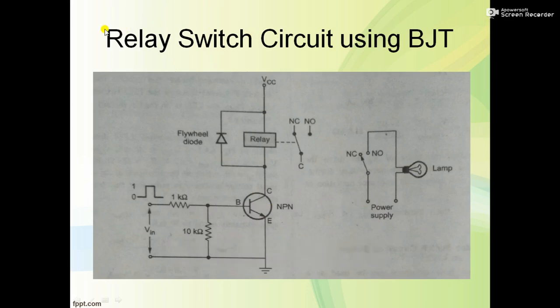Now let's discuss one more concept using BJT: how to operate the relay switch circuit. Again, we're using the common emitter circuit, and at the output side, at the collector side, the relay switch is connected.